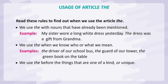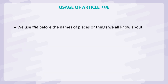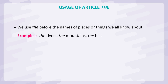We use the before things that are one of a kind or unique. Examples: the earth, the sun, the moon, the sky, the planets, the universe. We use the before the names of places or things we all know about. Examples: the rivers, the mountains, the hills.